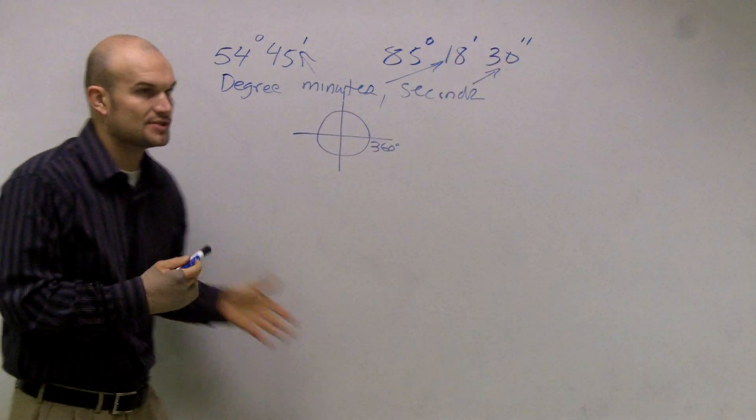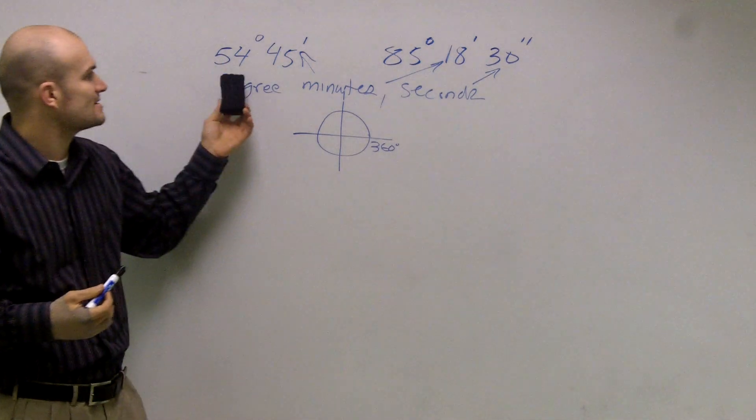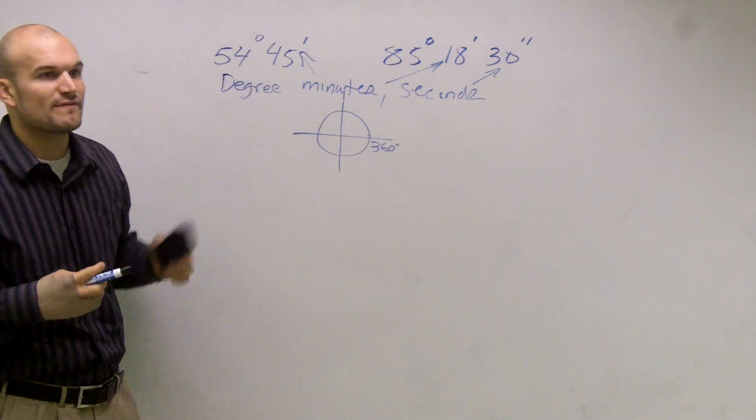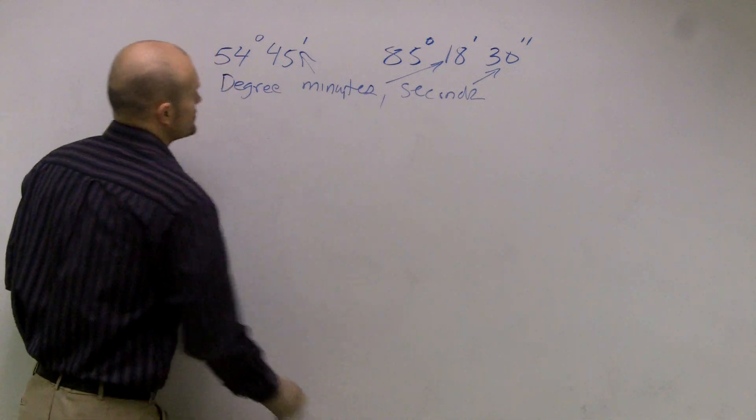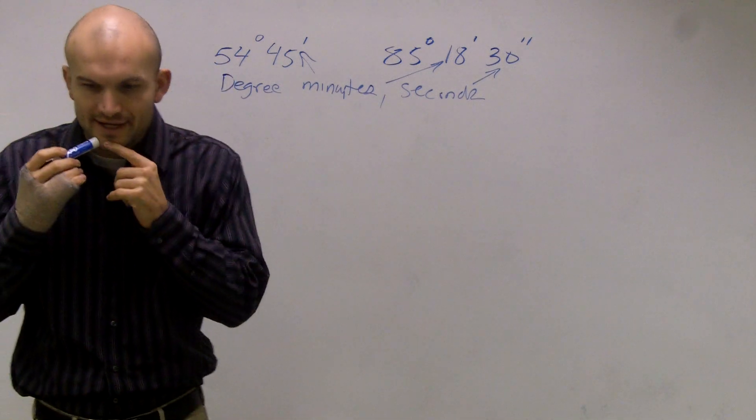And how are we going to find your value? If I gave you an angle and I said 54 degrees and 45 minutes, put that in decimal approximation, or put that as a decimal. Well, to do that, one way you can think about that is,